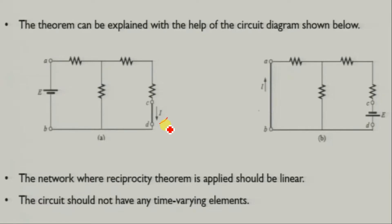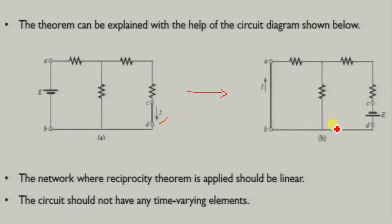The reciprocity theorem says: when we have a voltage source V or E, and because of it, current I flows in any branch, if we replace the source and move it to where the current was measured, we place our voltage source there. When there was a voltage source, we short circuit the original branch. If we had a current source instead, we would open circuit it.